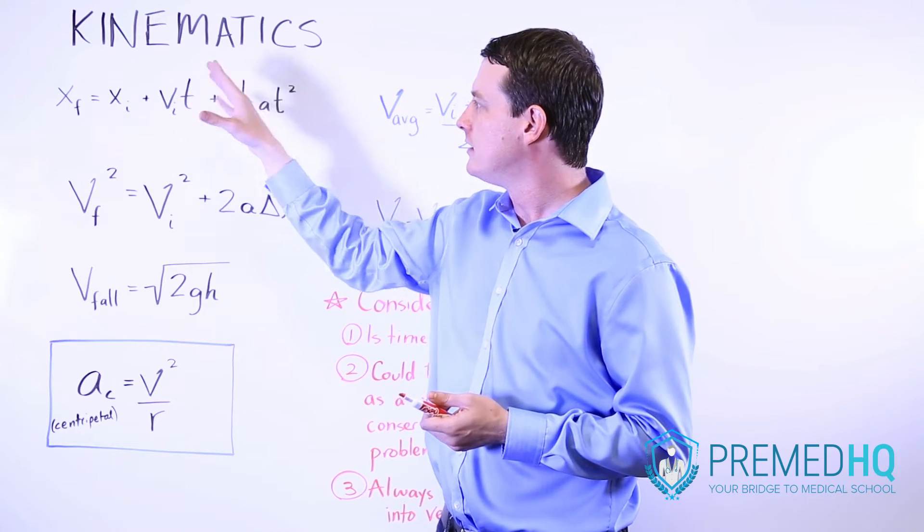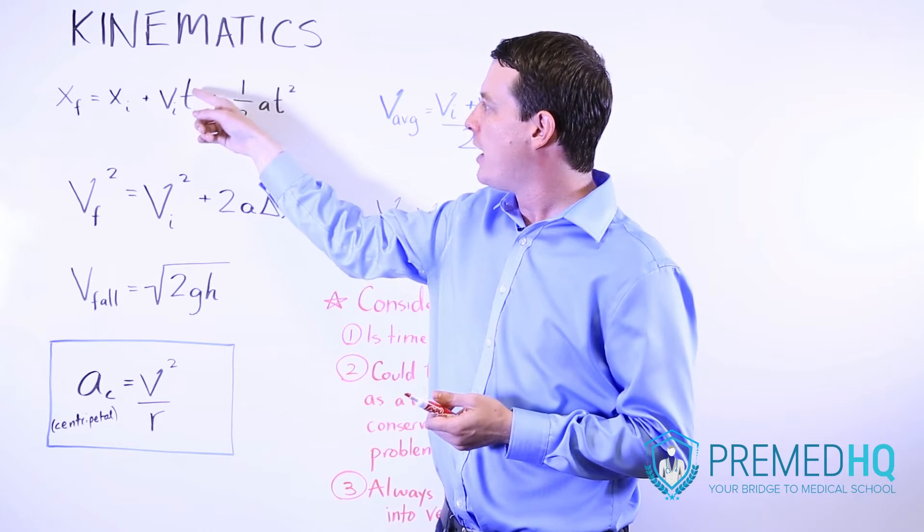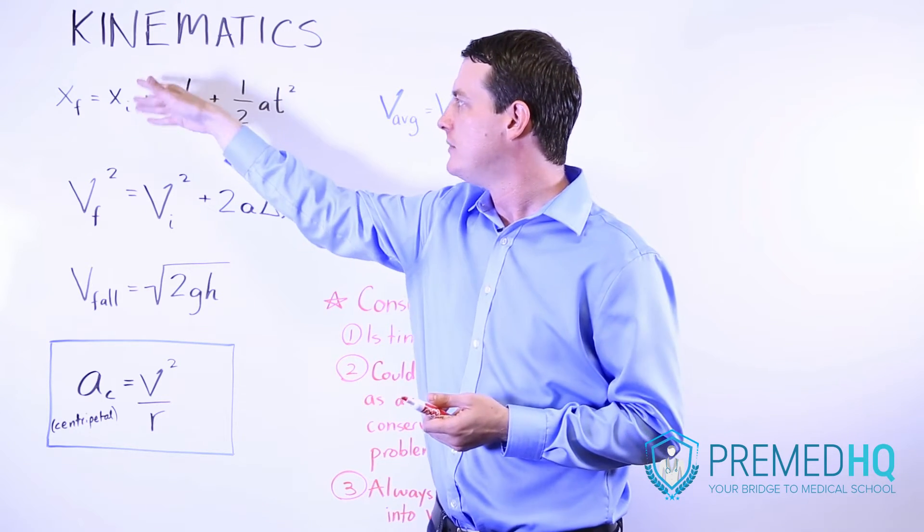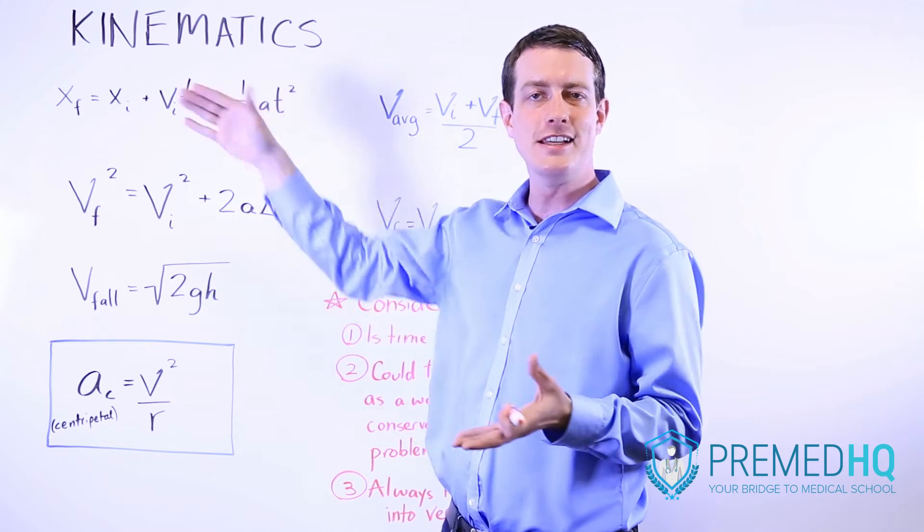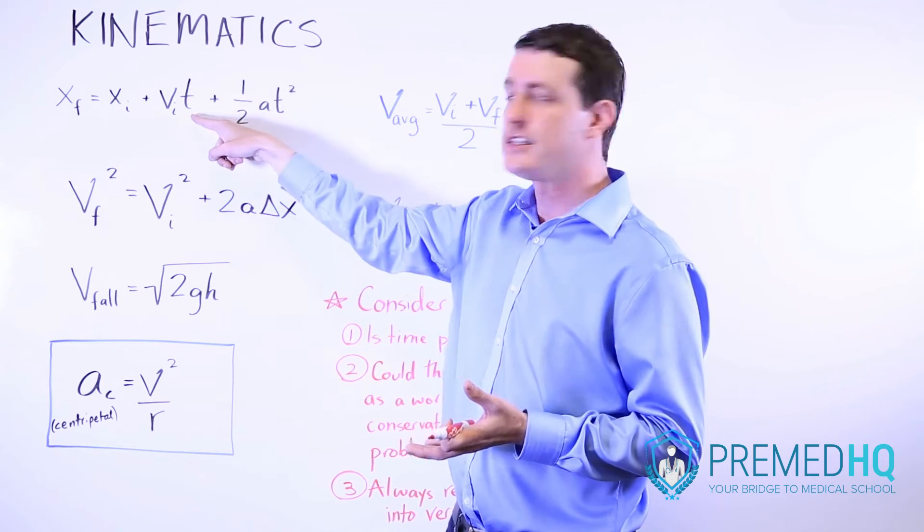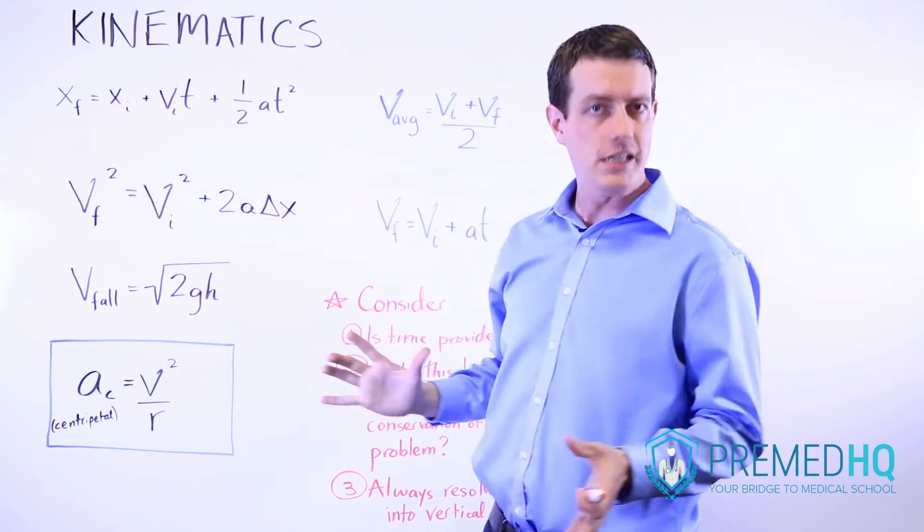The level to which you multiply by time increases as you move right. You go from nothing at all or t to the zero power, then t to the first power, and then t squared. That can be an important way to remember that.